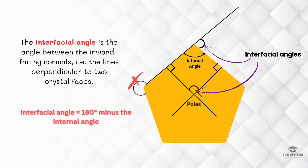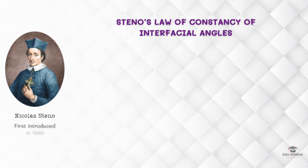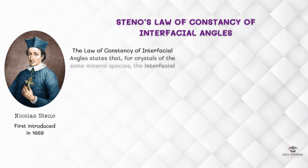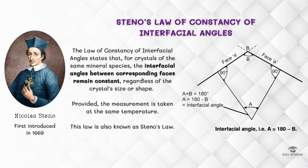We know that crystals are bound by plane faces, and the angle between the normals of two adjacent faces of a crystal is called the interfacial angle. The law of constancy of interfacial angles is a fundamental principle in crystallography. It was first introduced by Nicholas Steno in 1669. It states that for crystals of the same mineral species, the angles between corresponding faces remain constant, regardless of the crystal's size or shape. This consistency is due to the fixed atomic structure of the mineral.